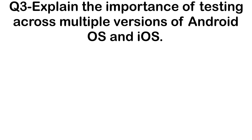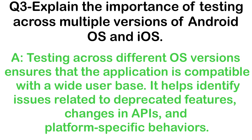Explain the importance of testing across multiple versions of Android operating systems and iOS. Testing across different operating system versions ensures that the application is compatible with a wide user base. It helps identify issues related to deprecated features, changes in APIs, and platform-specific behaviors.